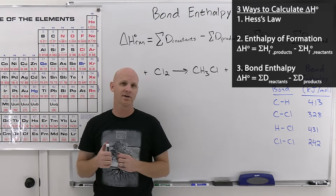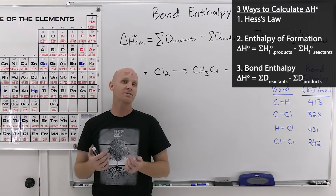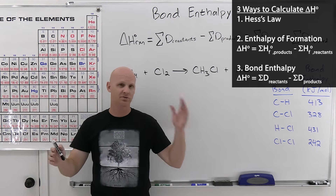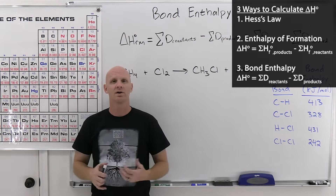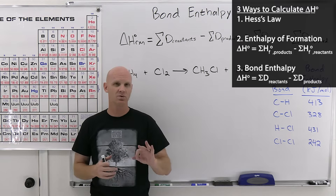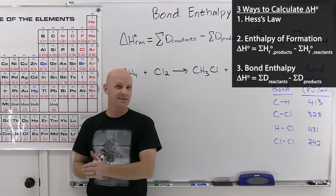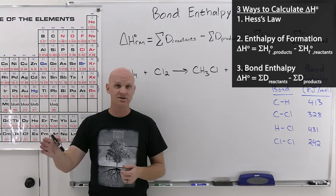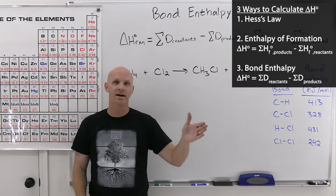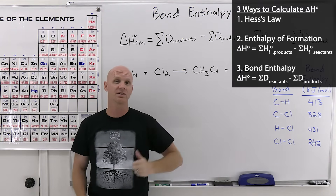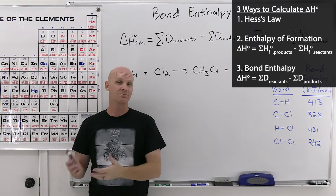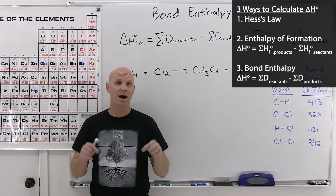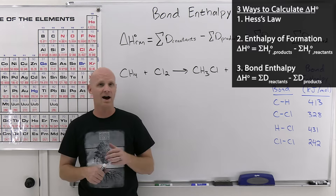Hess's law is the worst-case scenario. Then you learned about enthalpy of formation, which was much better — simple plug and chug, products minus reactants. The unfortunate thing is that this third way with bond enthalpies is reactants minus products. You really need to understand: were you given enthalpy of formation data, or bond enthalpy (bond dissociation energy) data? Because it matters whether it's products minus reactants or reactants minus products.